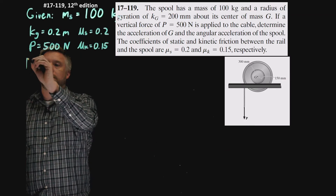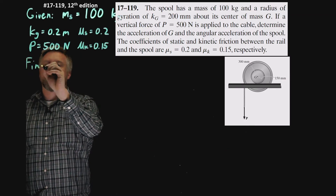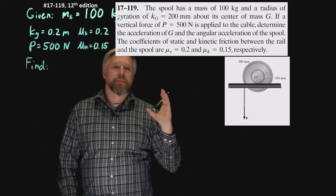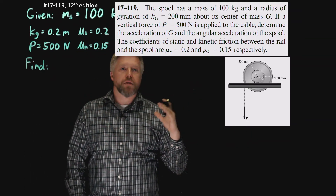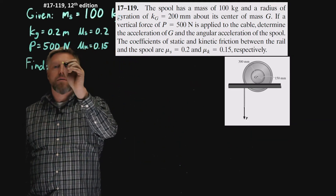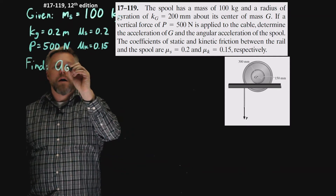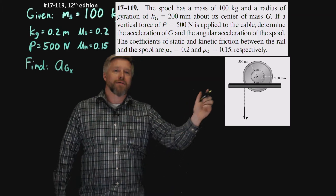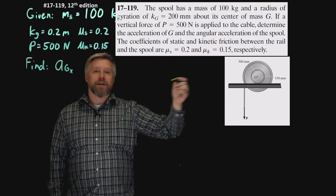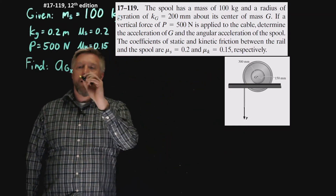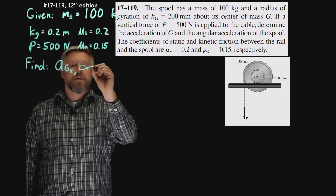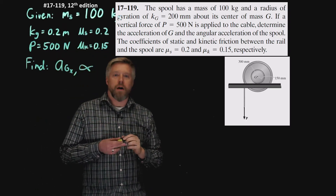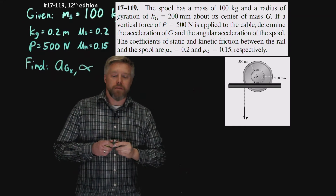Now for our Finds: we want to find the angular acceleration of the spool as well as the acceleration of the center of mass. We're going to find A_G, and I'll put a subscript x to remind myself the center of mass moves only in the x direction, not the y. And we also want to find alpha, the angular acceleration of the spool.